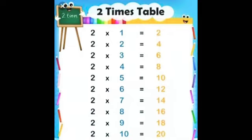Two, six times are twelve. Two, seven times are fourteen. Two, eight times are sixteen. Two, nine times are eighteen. Two, ten times are twenty.